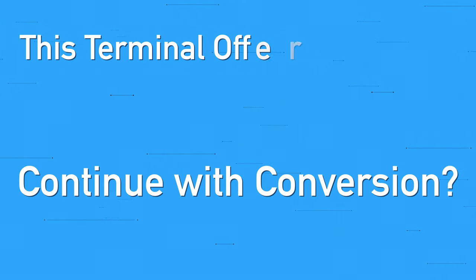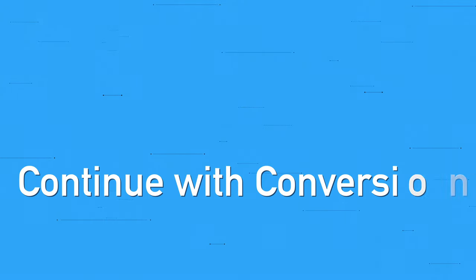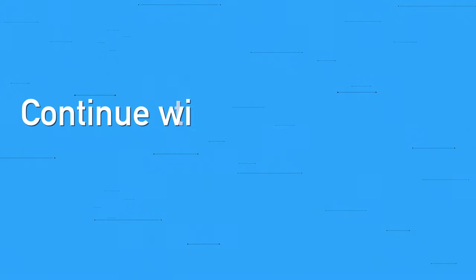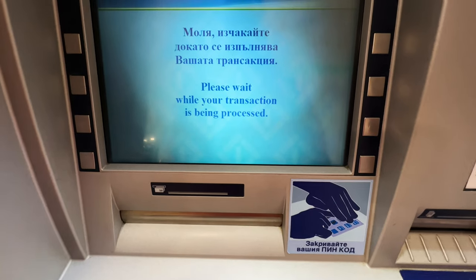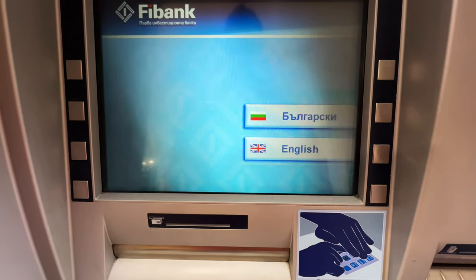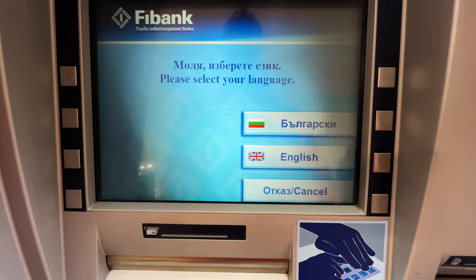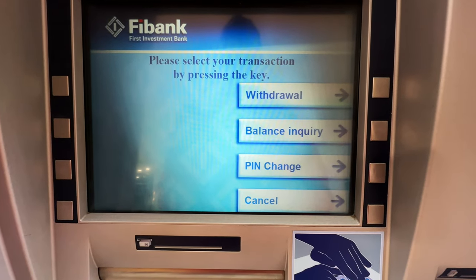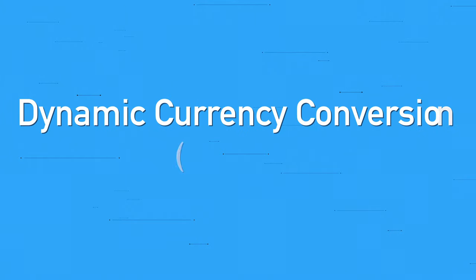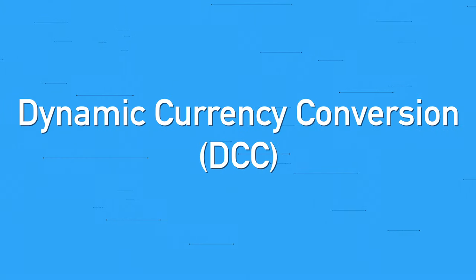The second option is to withdraw your money in the local currency. In other words, if your home currency is dollars and you're in Turkey, the ATM is asking if you want to be charged directly in the local currency, which is Turkish lira. The reason for this is something called dynamic currency conversion, or DCC.